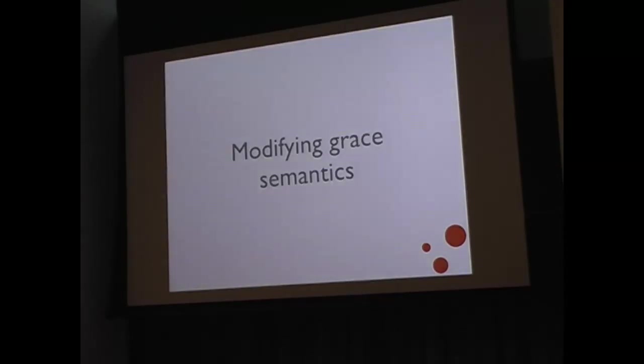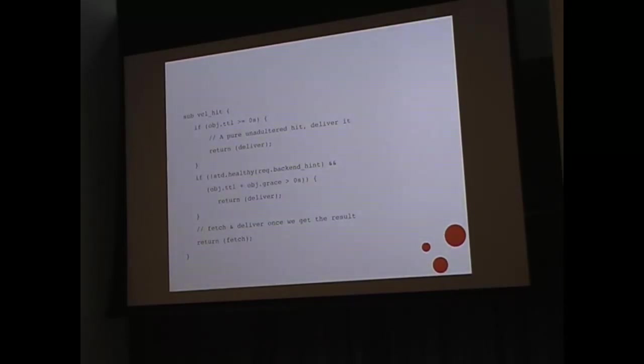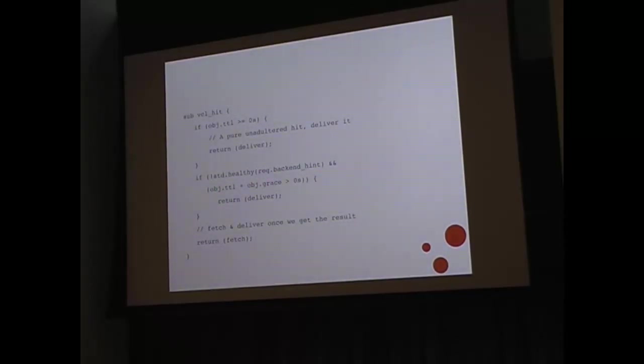For example, if we're dealing with financial instruments and are very reluctant to serve out-of-date content, we can modify the grace VCL. The first bit is unchanged. In the second bit: if std.healthy — meaning 'is this backend healthy?' — and the TTL plus grace is more than zero seconds, then deliver. But only if the backend is not healthy do we deliver stale content. So we only use grace when the backend is down.